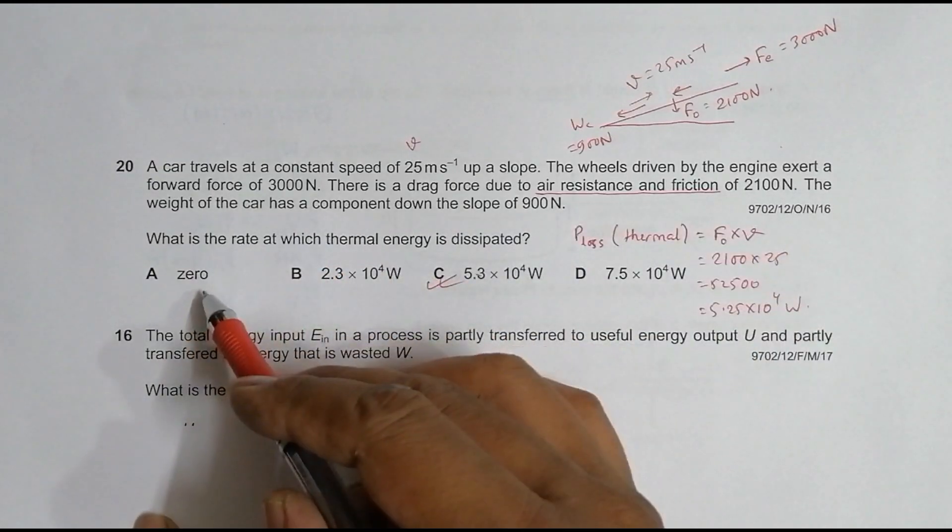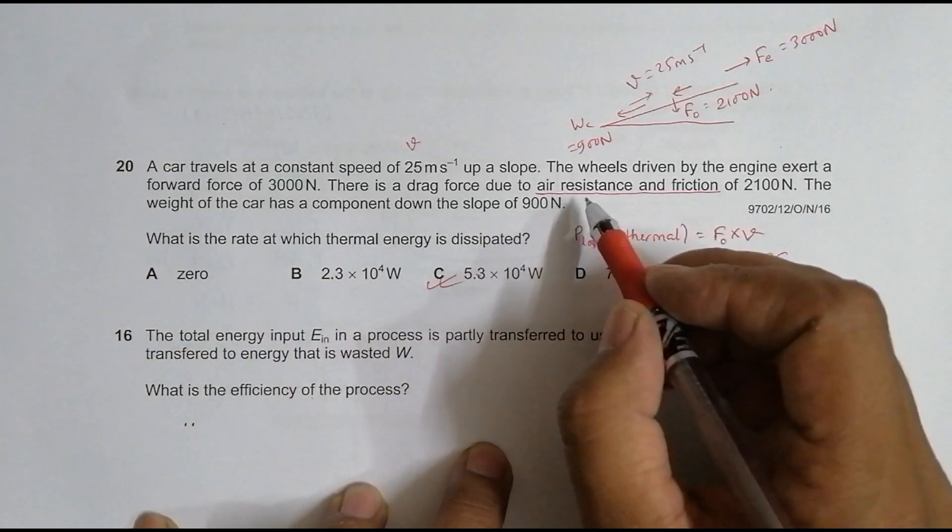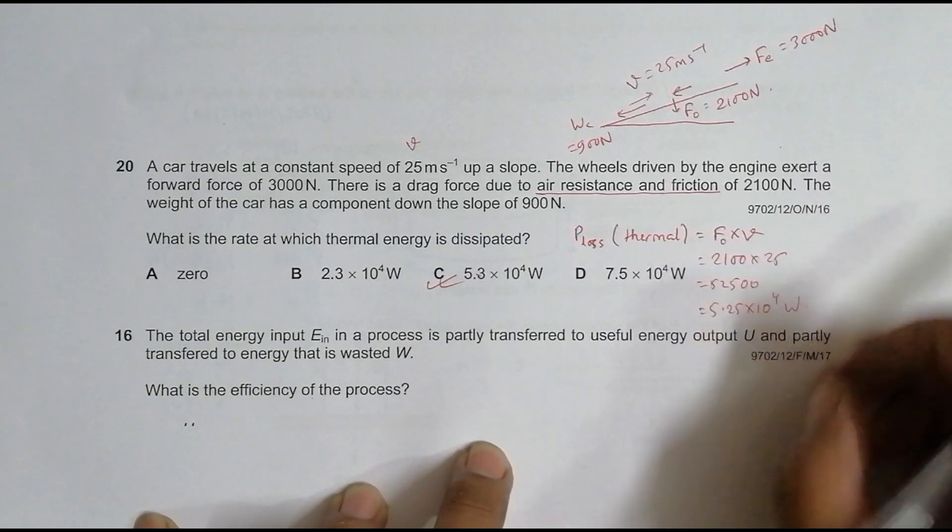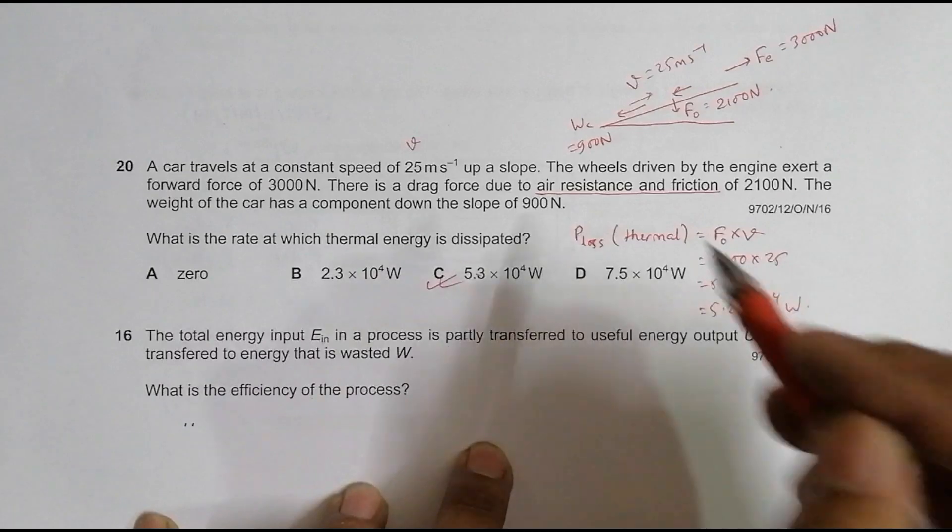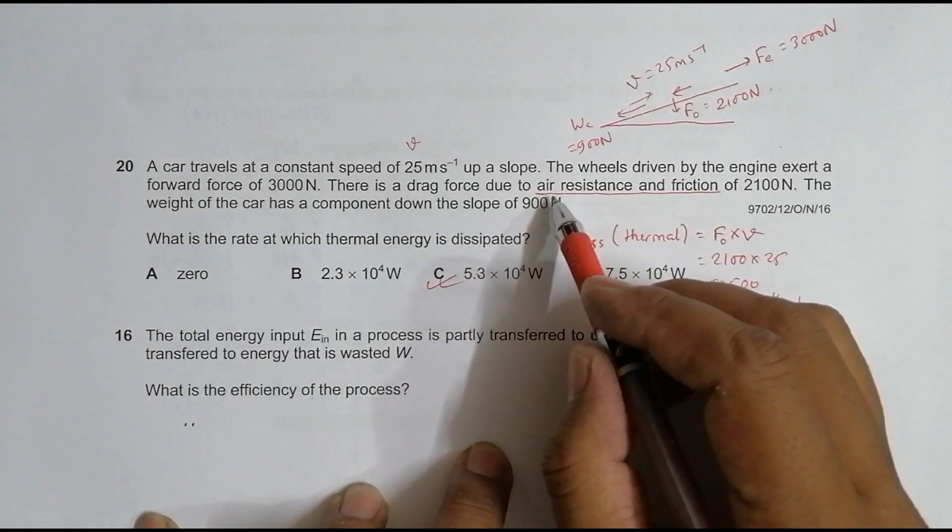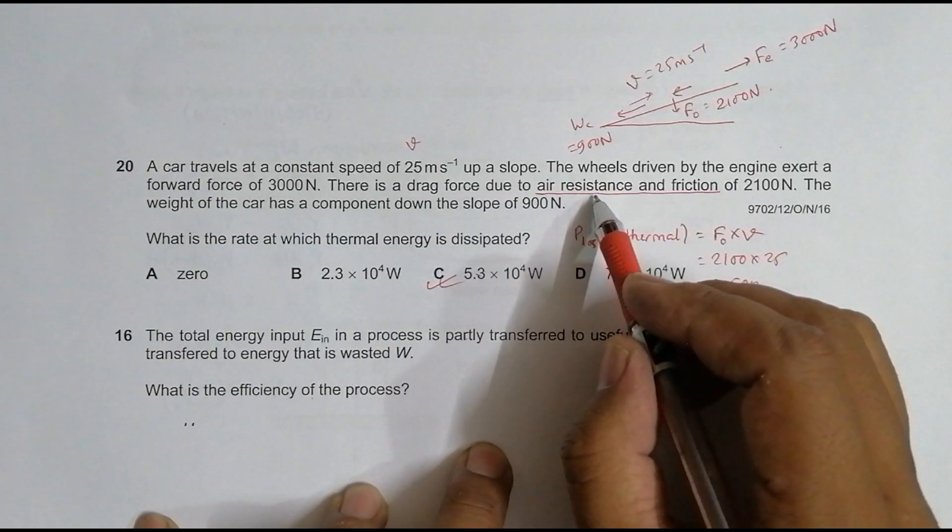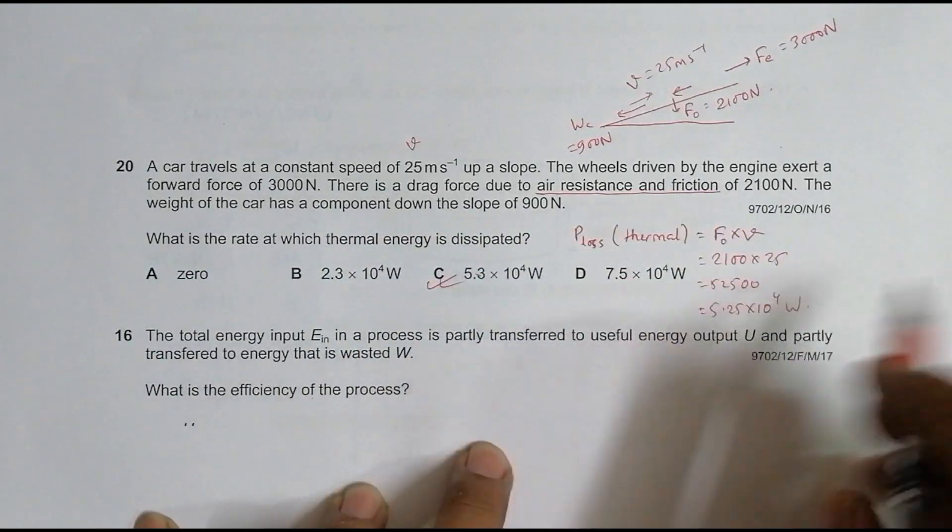But what the question asks is it says the thermal energy rate of production of thermal energy, and that is related to the opposing forces. So the force used is the opposing one and not the total force.